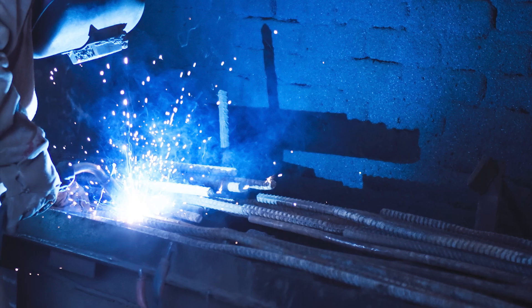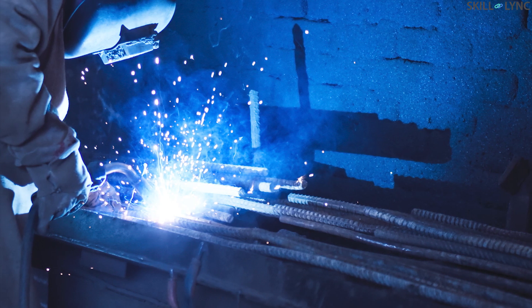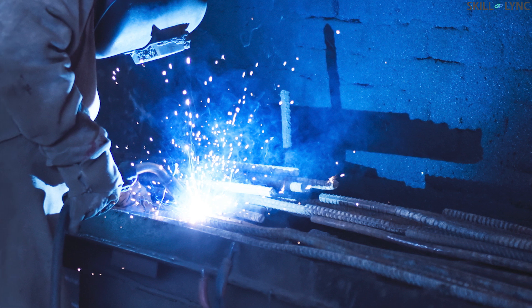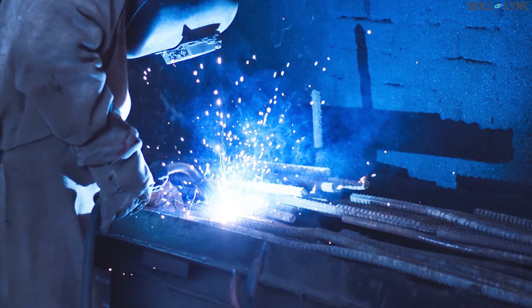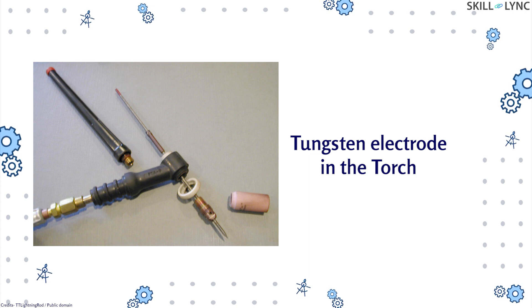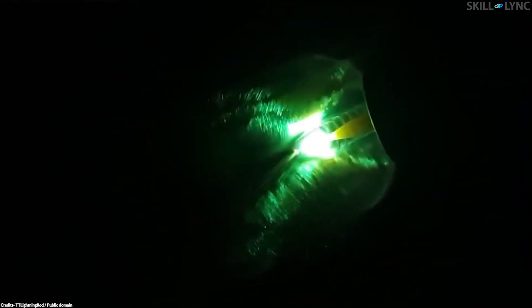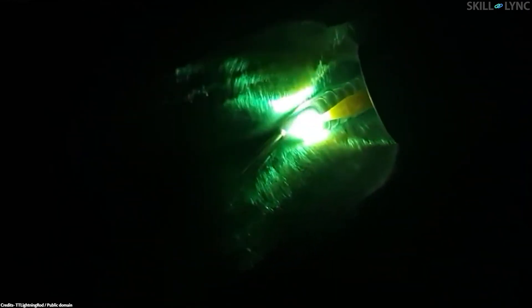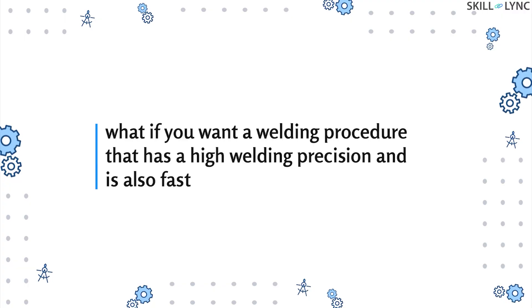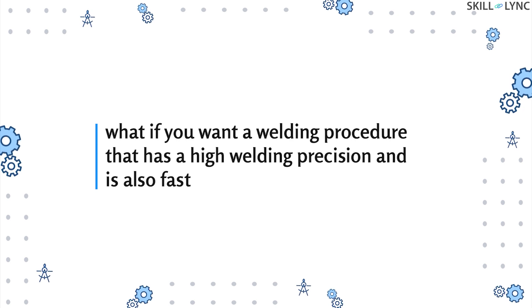Welcome to Skill Link. In one of our previous videos we talked about gas tungsten arc welding, also known as TIG welding — a process where the electrode is not consumable. TIG welding is mostly used in applications requiring extremely high precision, but this comes with a downside: the speed of welding is reduced. So what if we want a welding procedure that has both high precision and is also fast?